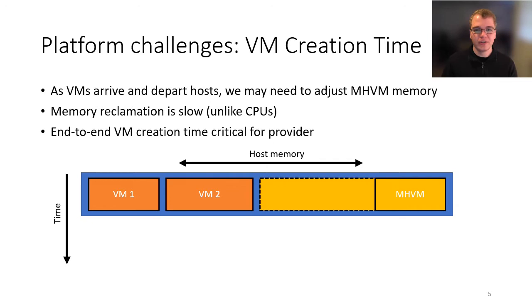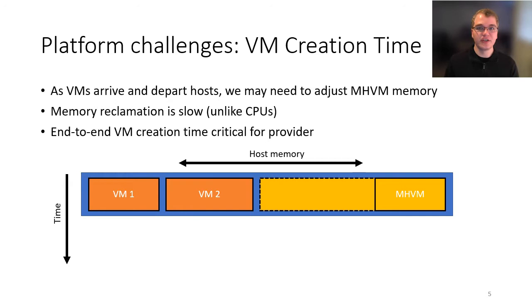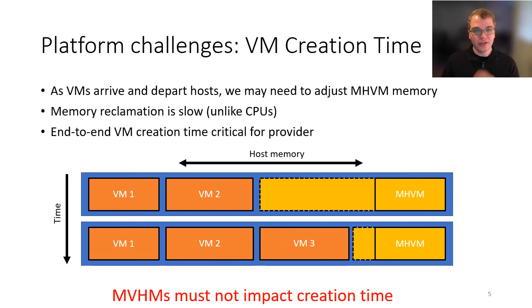The first platform challenge is VM creation time. As VMs arrive and depart on hosts, we may need to adjust the memory our MHVM is allocated. But memory reclamation is very slow — unlike CPUs — on the order of 10 gigabytes per second throughput. Even adding a second or a few hundred milliseconds to creation time is unacceptable for the provider. If a new guest needs to land while all host memory is full, we'd have to wait seconds for the MHVM to return the necessary memory before it can start.